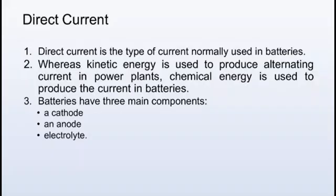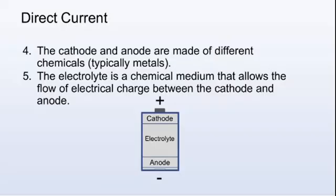Direct current is the type of current normally used in batteries. Whereas kinetic energy is used to produce alternating current in power plants, chemical energy is used to produce the current in batteries. Batteries have three main components: a cathode, an anode, and electrolyte. The cathode and anode are made of different chemicals, typically metals. The electrolyte is a chemical medium that allows the flow of electrical charge between the cathode and anode.